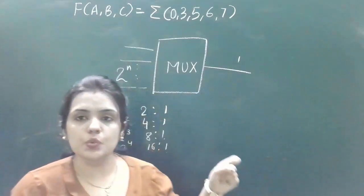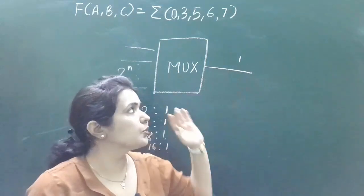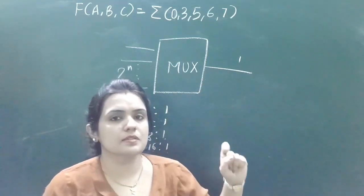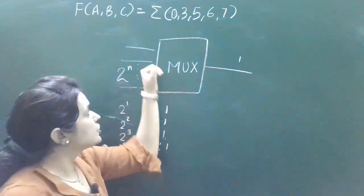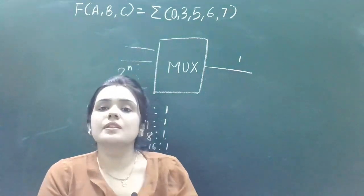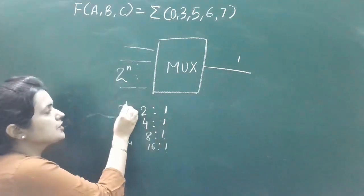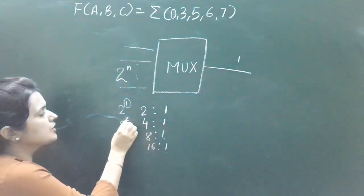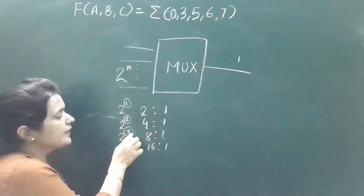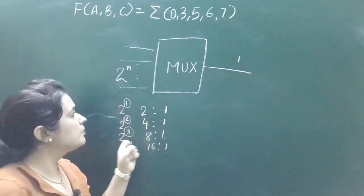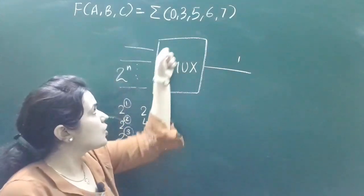Only one of these input lines is selected for output at a time, and the number of outputs is always one in a multiplexer. Which input will be selected is decided by the control selection lines. If we have a 2-to-1 multiplexer, the number of selection lines will be 1; for 4-to-1, it will be 2; for 8-to-1, it will also be determined by the exponent.